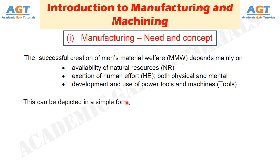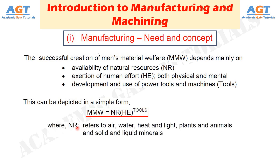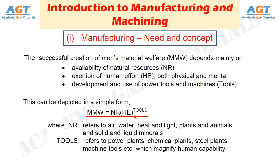This can be depicted in a simple form: MMW = NR × HE^(tools), where NR refers to air, water, heat and light, plants and animals, and solid and liquid minerals. Tools refers to power plants, chemical plants, steel plants, machine tools, etc., which magnify human capability. This clearly indicates the important roles of the components NR, HE and Tools on achieving MMW and progress of civilization.